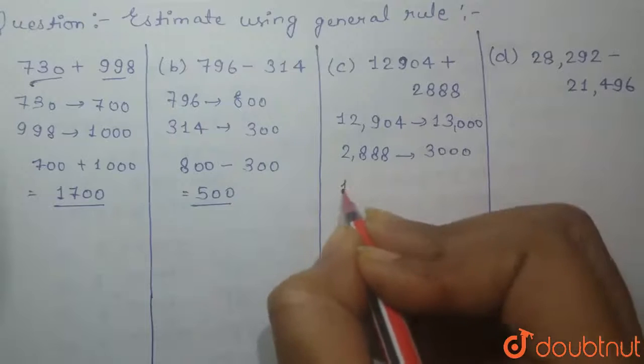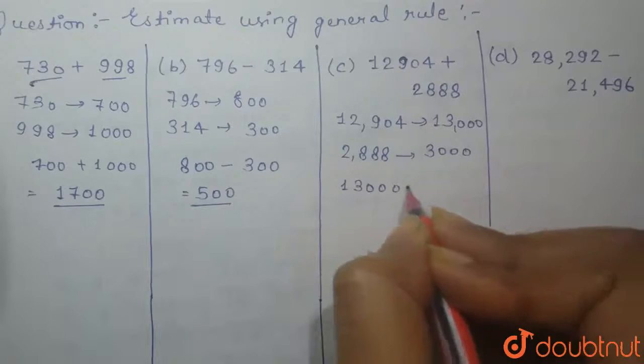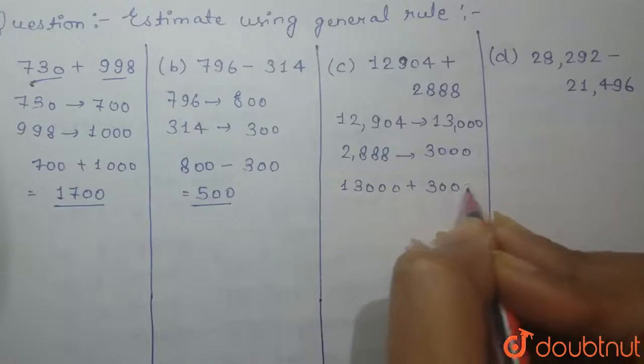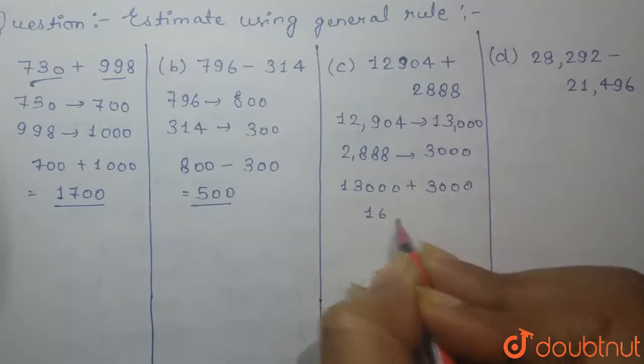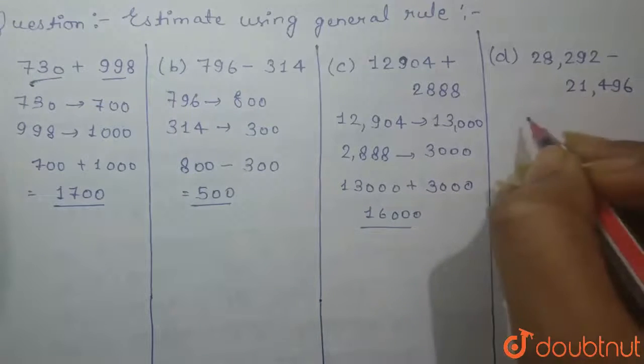When we add both these numbers, 13,000 plus 3,000, we will get 16,000. This is our third answer.